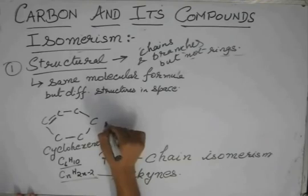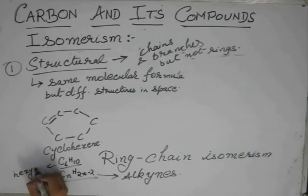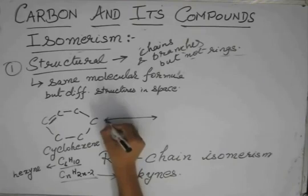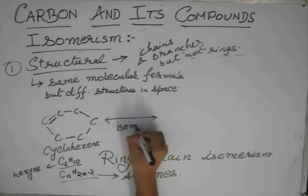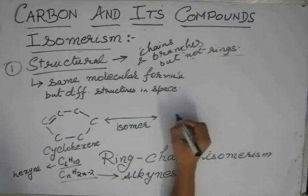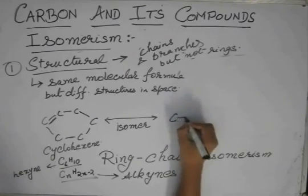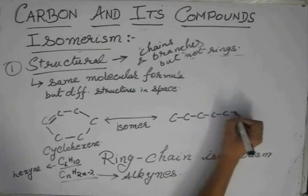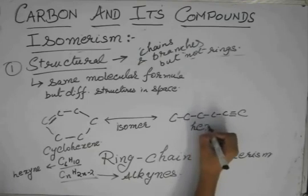So cyclohexene in this case, C6H10, is hexyne. So cyclohexene is an isomer of hexyne.